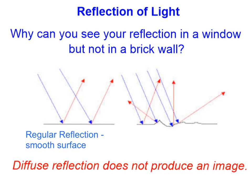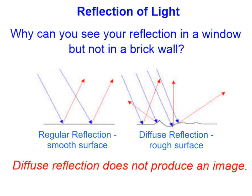A brick wall has a very uneven surface, like this one right here, and that causes incoming parallel light waves to be reflected in many different directions at many different angles all over. The reflection of light from a rough surface is called diffuse reflection. Diffuse reflection does not produce an image, which is why you cannot see your image in a brick wall.